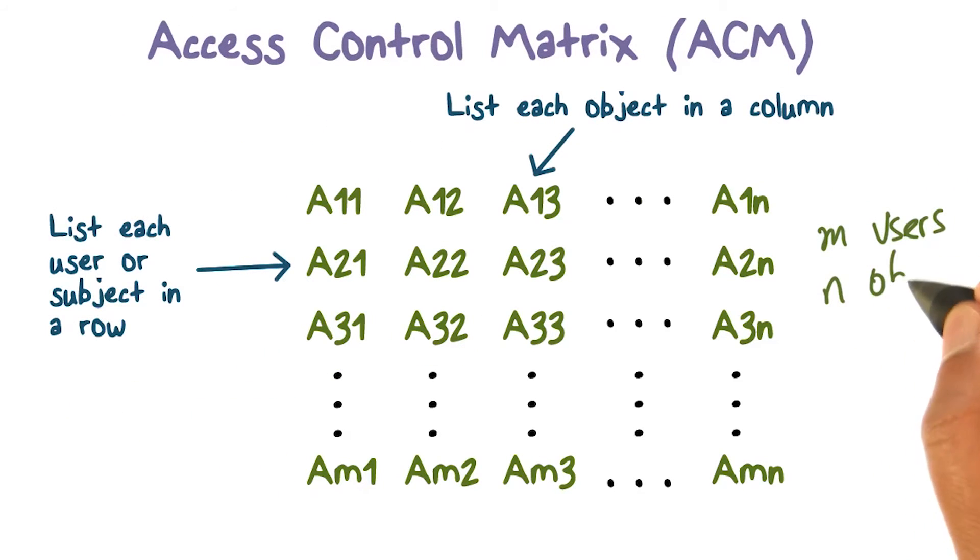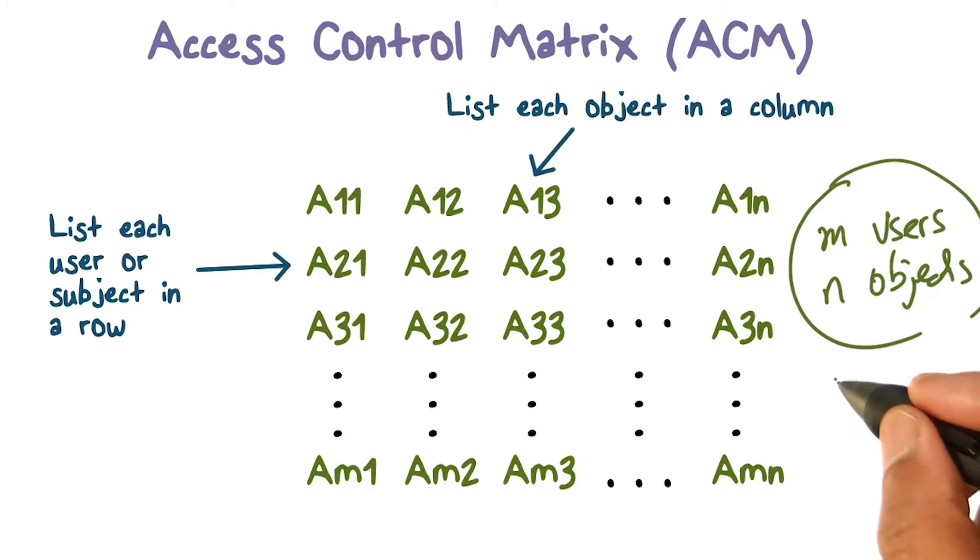This is what we just discussed for the case where there are m users and n objects. This is an m by n matrix. A row here corresponds to each user, a column here corresponds to each object.